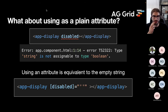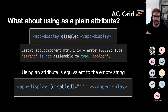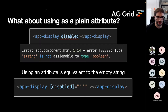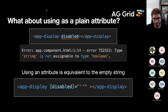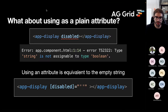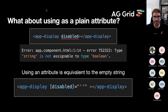But what if somebody is using a plain attribute? This is quite common across components and HTML elements — just saying 'disabled' to disable something. If you do this, you'll get an error saying 'type string is not assignable to type boolean.' This is because when you put a plain disabled attribute on an element, it gets converted to square brackets with an empty string. So what the component is actually receiving is an empty string, not a boolean.